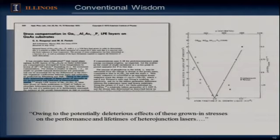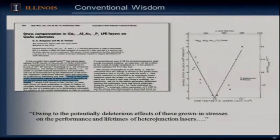When I got to Bell Labs, the first week I had a discussion with my boss about strain compensation. The key point was that owing to the potentially deleterious effects of growing-in stresses on the performance and lifetimes of heterojunction lasers, they were intentionally adding a tiny fraction — tenths of a percent — of phosphorus composition so the layers would be mismatched at the growth temperature. In aluminum gallium arsenide, which is nearly lattice matched over the whole range, they'd add enough phosphorus so it would be mismatched at the growth temperature, and when it cooled to room temperature, even the tiny natural mismatch in the system would be eliminated, tracking that back onto laser reliability.